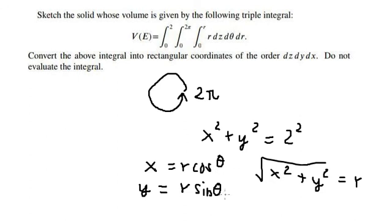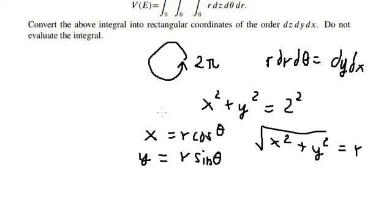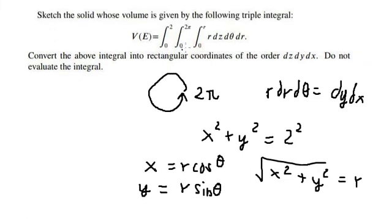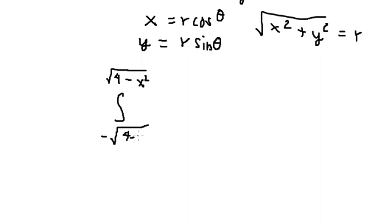If we substitute this in, we get r dr d theta. Then we change back to dy dx. Now we need to change everything. So because they go the full circle, this one will be under the square root of 4 minus x squared, and we have negative square root of 4 minus x squared.